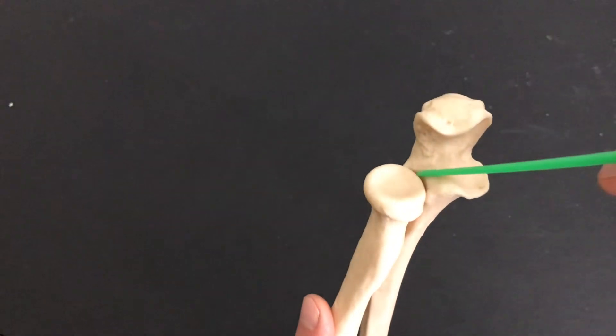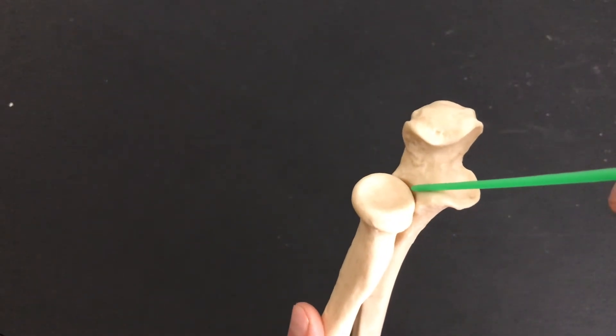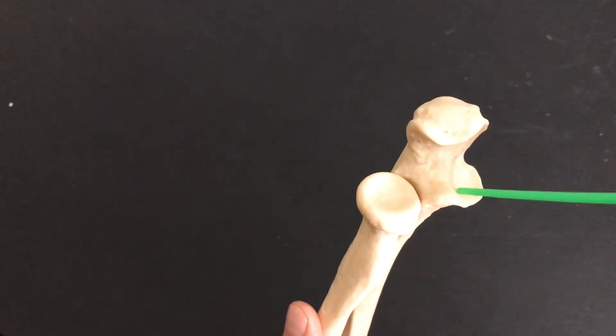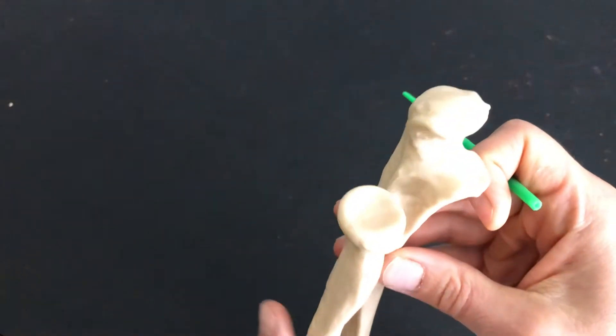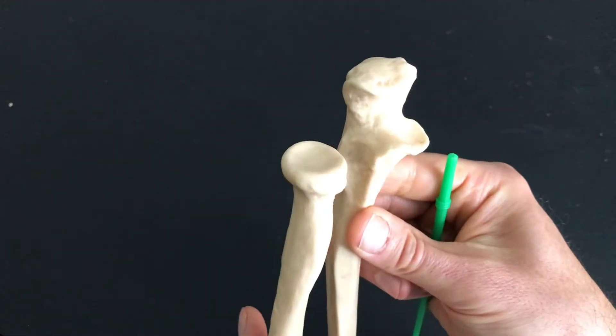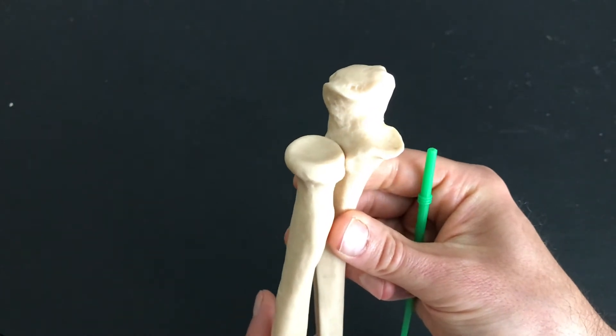At your elbow end, or the proximal end—this is the superior end—you'll notice that the ulna itself has something called the radial notch. This is your radial notch because, surprise surprise, your radius is going to fit right in there.